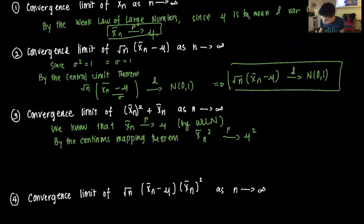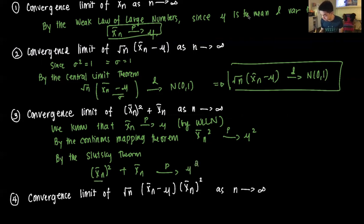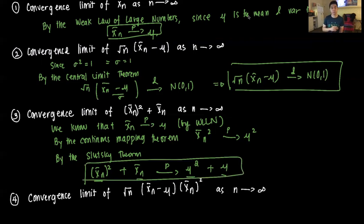Then by the Slutsky theorem, we can add the two results. So x̄ₙ² + x̄ₙ will converge in probability to μ² + μ, where μ² is the limit of x̄ₙ² and μ is the limit of x̄ₙ. That's the answer for this particular case.